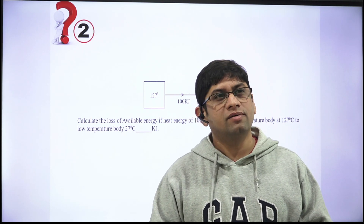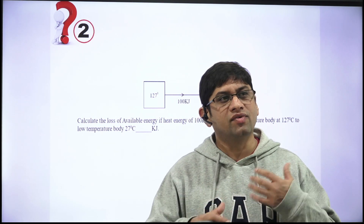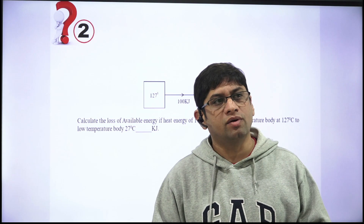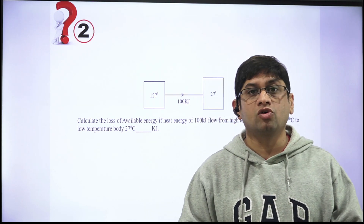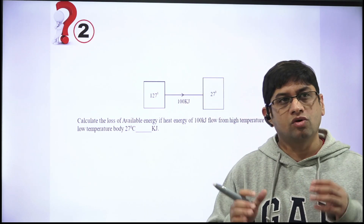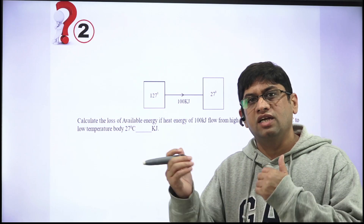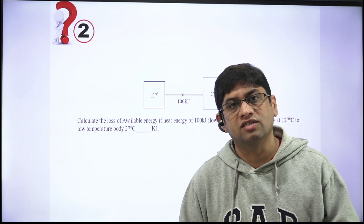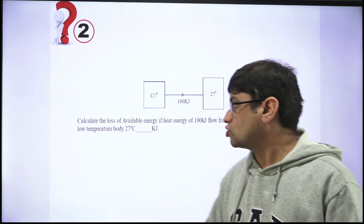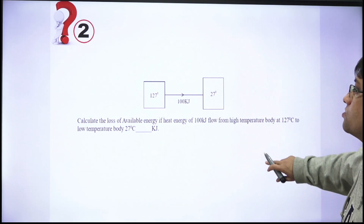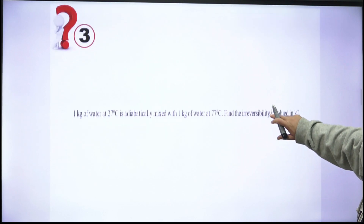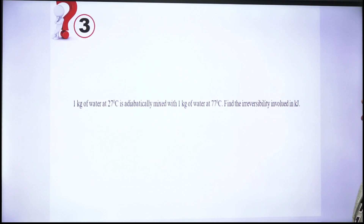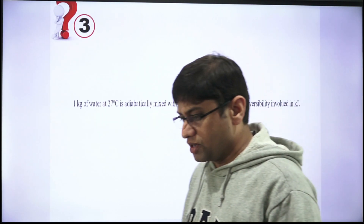The maximum theoretical work extracted reversibly is one part, but when you calculate it, the system should be brought to the dead state. Compared to the dead state, how much work can I extract — that is to be calculated in this case. Question 3: One kilogram of water at 27°C is adiabatically mixed with one kilogram of water at 77°C.